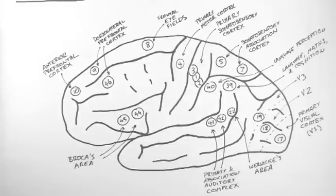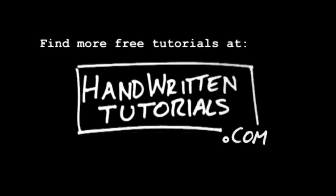That's an overview of the functional cortical anatomy from the lateral surface. In the next video, we'll have a look at the gross cortical anatomy of the medial surface of the hemisphere. For more free tutorials and the PDF of this tutorial, visit www.HandwrittenTutorials.com